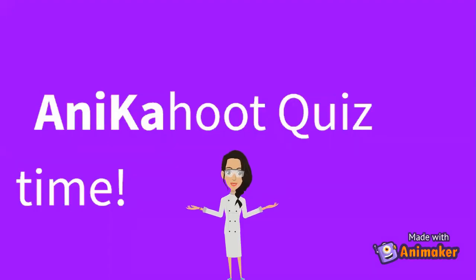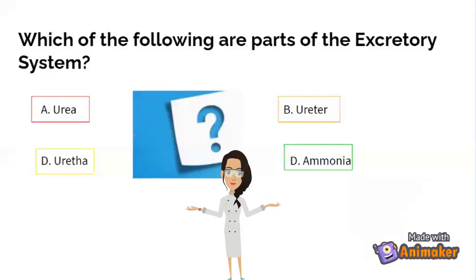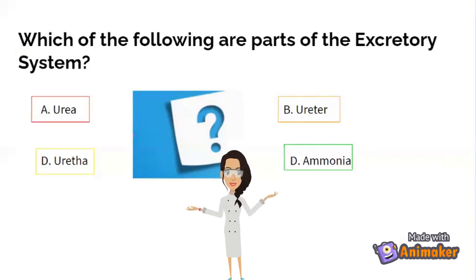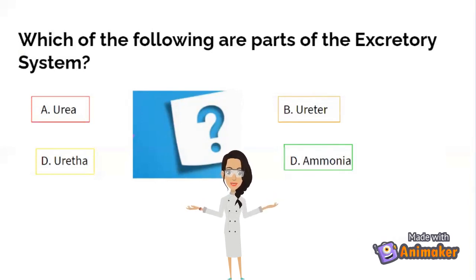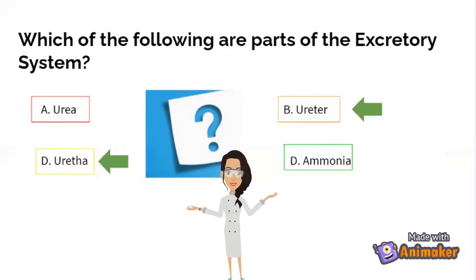Kahoot quiz time! Which of the following are parts of the excretory system? A: the urea, B: the ureter, C: the urethra, and D: Maunya. Did you get it? The answer is B and D.